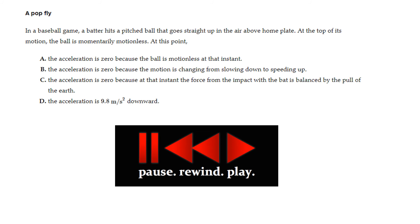Let's look at another problem. This is about a pop fly. In a baseball game, a batter hits a pitched ball that goes straight up into the air. At the top of the motion, the ball is momentarily motionless. It was going up, and it's motionless for an instant, and it starts coming down. At this point, it's a multiple choice. The acceleration is zero because the ball is motionless at that instant. The acceleration is zero because the motion is changing from slowing up to speeding down. C, the acceleration is zero because at that instant the force from the impact of the bat is balanced by the pull from the earth. Or D, the acceleration is 9.8 meters per second squared downward. You know what to do.